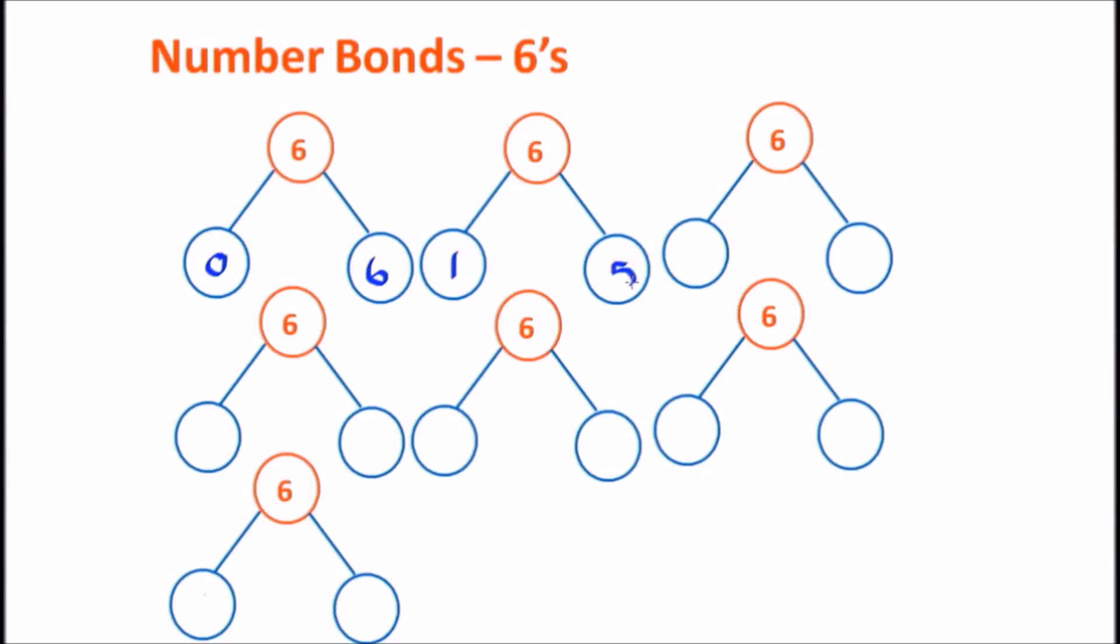So the first number bond we created was a 0 and a 6. Then a 1 and a 5. Then we had a 2 and a 4. And then a 3 and another 3. The next number bond was a 4 and a 2. And then a 5 and a 1. And finally, we did a 6 and a 0.